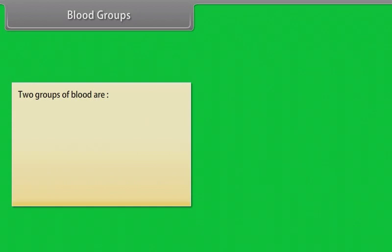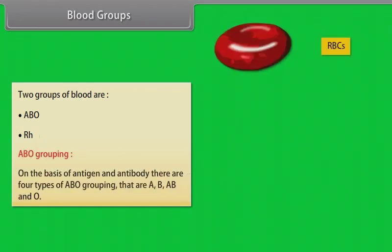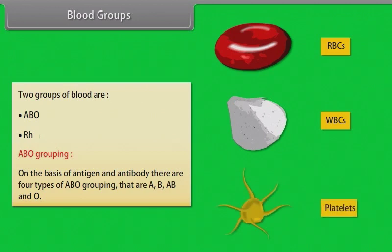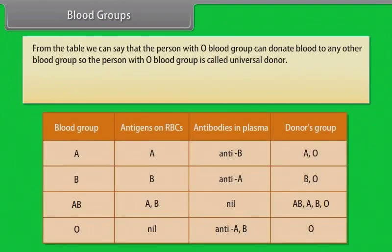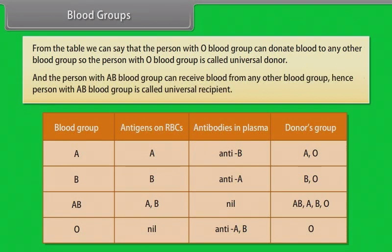Blood groups: There are two groups of blood — ABO and RH. ABO grouping: On the basis of antigen and antibody, there are four types of ABO grouping: A, B, AB, and O. From the table, we can say that the person with O blood group can donate blood to any other blood group, so the person with O blood group is called the universal donor. The person with AB blood group can receive blood from any other blood group, hence the person with AB blood group is called the universal recipient.